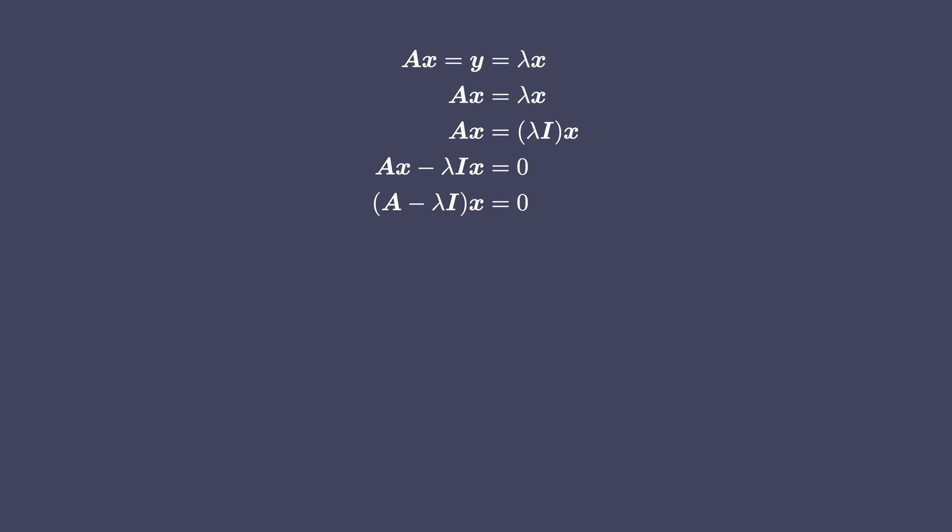Now there are two possible solutions. One is where x equals 0, that is, the vector itself is 0, which isn't what we are looking for. We want non-zero eigenvectors. So let's see the other possibility, which is that the determinant of the matrix A minus lambda I is 0. You know what happens when the determinant of a matrix is 0. If you don't, watch my previous video on determinants after you watch this video. For now, you just need to know that if the determinant of a matrix is 0, then the transformation associated with that matrix squishes the space into a lower dimension.